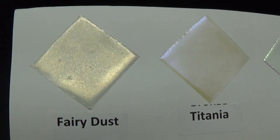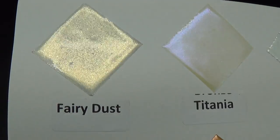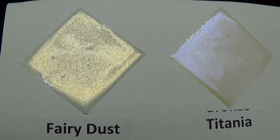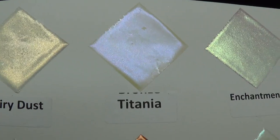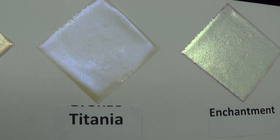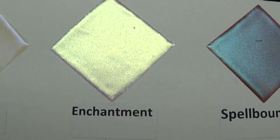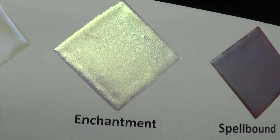The first one is Fairy Dust, which has more of a goldish tinge, which I hope you can see. Titania gives you more of a violet look. And Enchantment has a pink with slightly gold greenish tone to it as well.